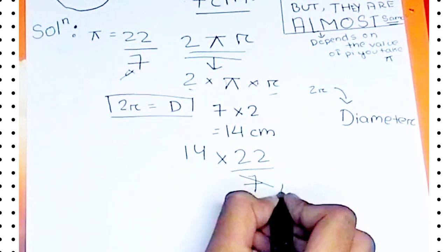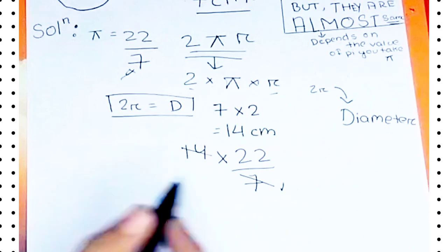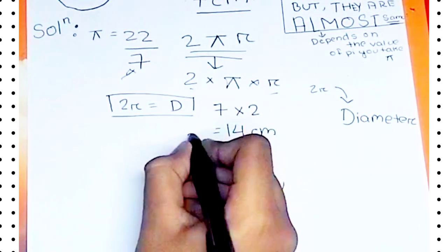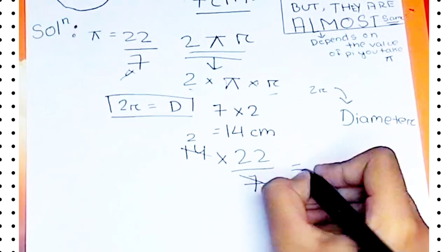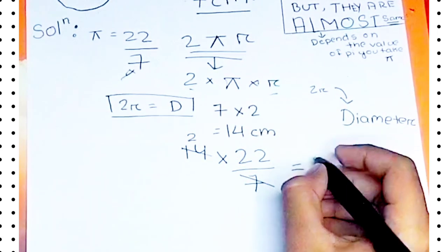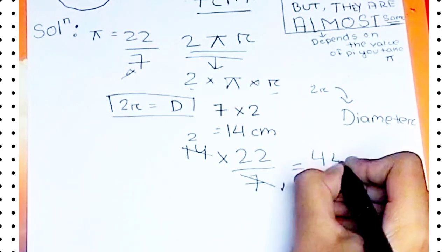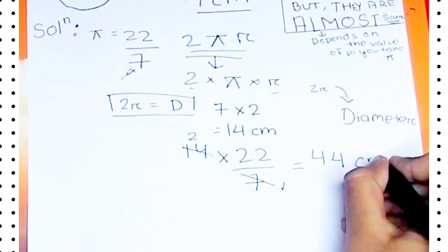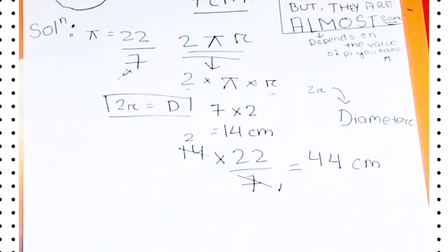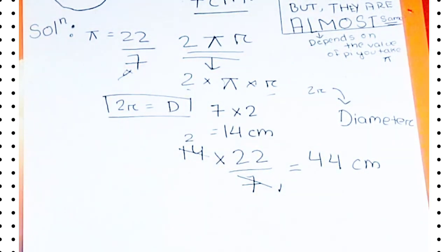You will simply divide: 7 into 14 is 2. That means what we get? 2 multiplied by 22 which is 44 centimeters is the circumference of the circle.